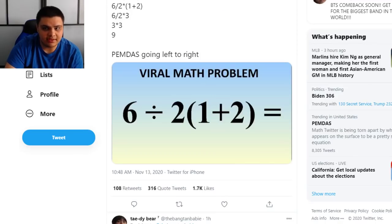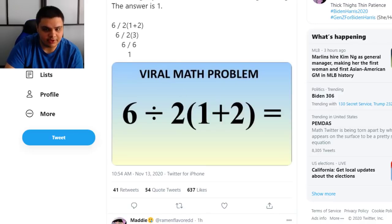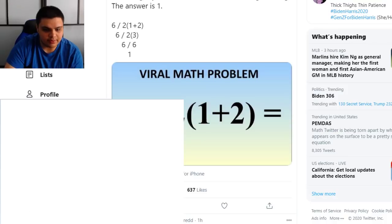So when we take a look at this math problem here, here is essentially what you have to do. So what we have is we have 6 ÷ 2. You've got 6 ÷ 2, right? And then you've got in parentheses, 1 + 2.